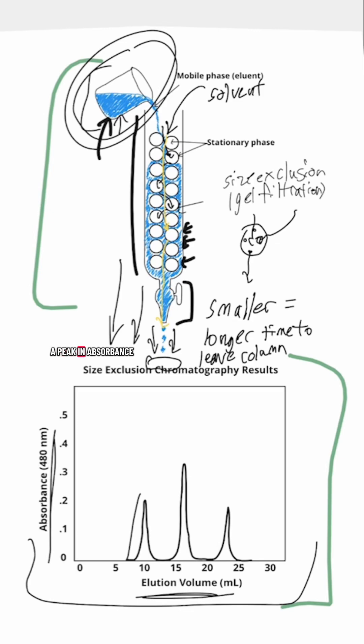Every time that we have a peak in absorbance, that means that we are having some of the molecules of interest exiting that column.